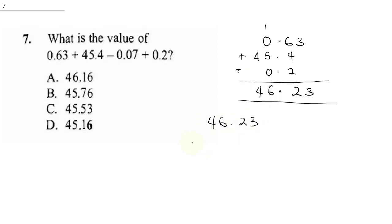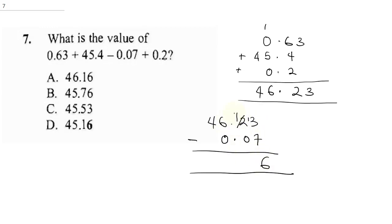Now we subtract 0.07 from 46.23. Since 3 minus 7 doesn't work, we borrow one — making it 13 minus 7, which gives 6. Then 1 minus 0 is 1, giving us the decimal part. Our final answer is 46.16, which I'll circle.